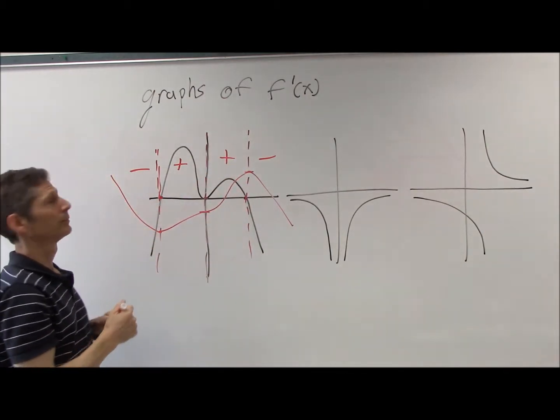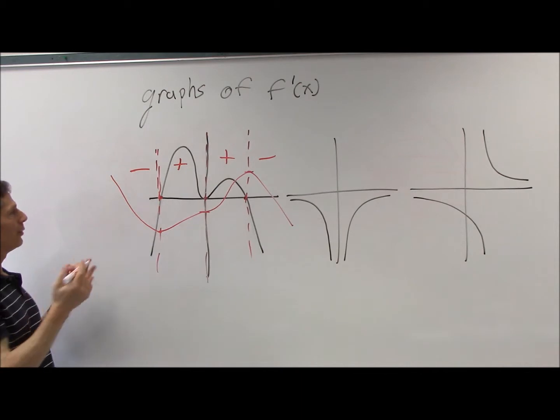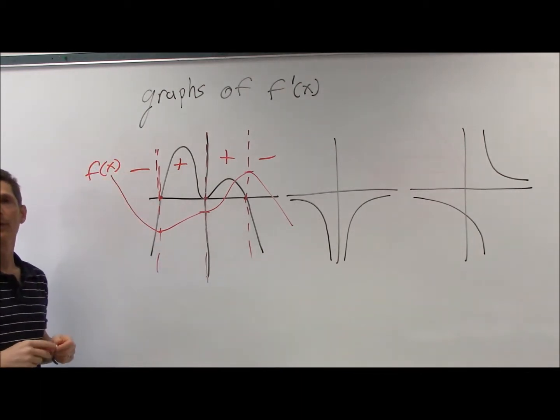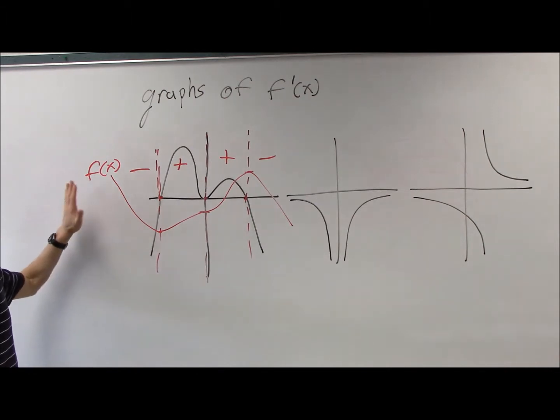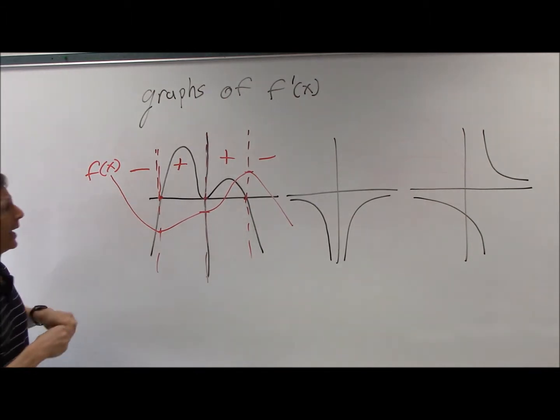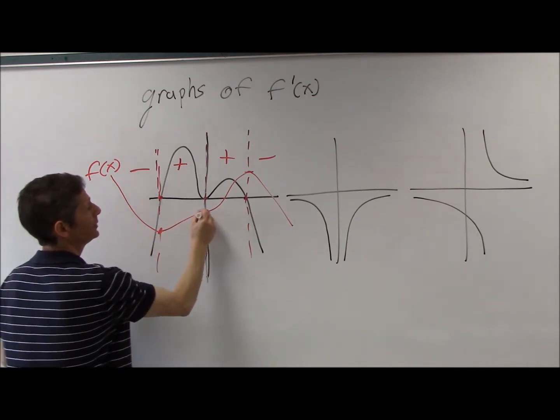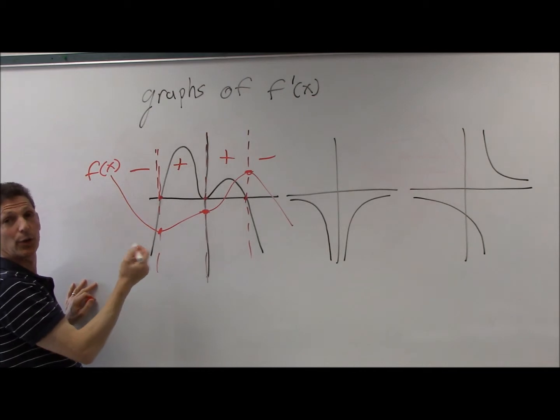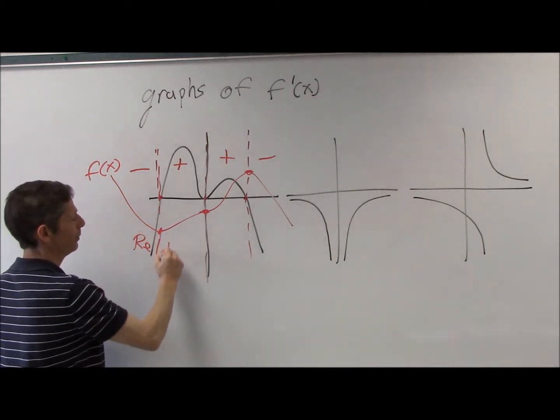So we don't know anything about the y values. That is correct. We don't know the y intercept or how high or low. We're really just focusing on the x values. The critical points of the x values. So this is a picture of f of x. These are all critical points. This is a minimum point, a relative minimum or local.